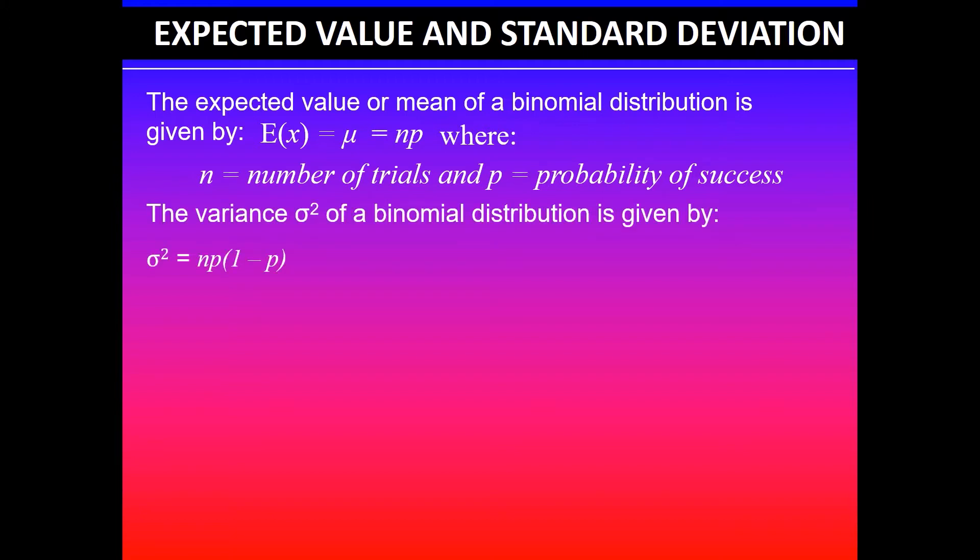The variance of a binomial distribution is given by σ² = np(1-p), where p is probability of success times the probability of failure, and probability of failure is given by 1 minus p. If I let q be the probability of failure, then the formula simplifies to σ² = npq, where p is probability of success and q is probability of failure, which is the complement of probability of success.